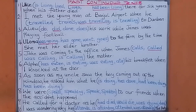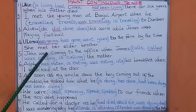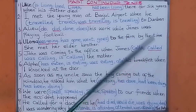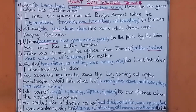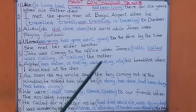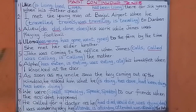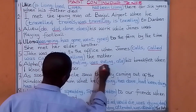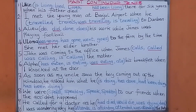Sometimes when you see 'James is calling,' that is not past continuous tense. Number six: Alpha — has eaten / is eaten / was eaten / ate — his breakfast when I knocked at the door. Knocked is past tense, so the answer: Alpha was eating his breakfast when I knocked at the door.